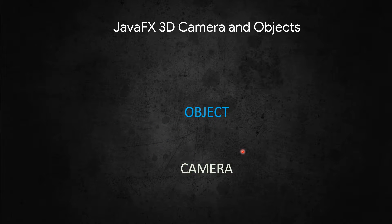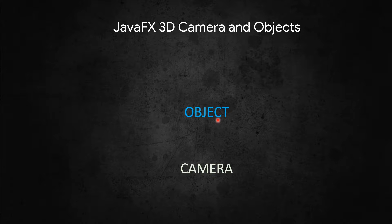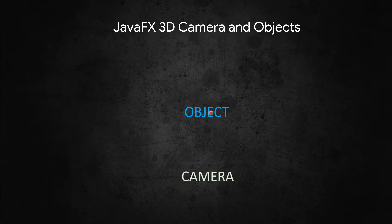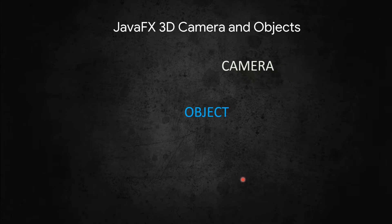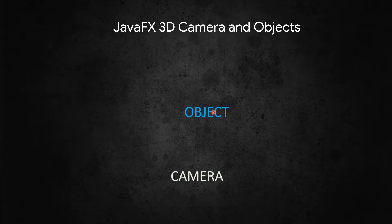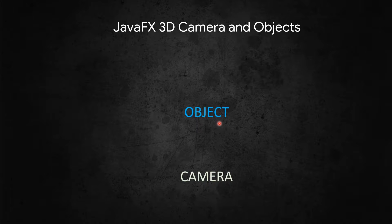Now let us talk about the camera system in JavaFX. You have an object and a camera. If you want to see rotation, there are two options: you can either rotate the object through a fixed camera, or keep the object fixed and rotate the camera. Both are equivalent. You can either rotate the camera around the object or rotate the object itself. Now let us go ahead and build the sphere-based application.